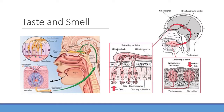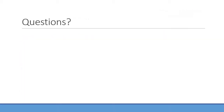Taste and smell are transmitted to similar areas of the thalamus, allowing integration of both senses for a more complete picture of what we're tasting and smelling simultaneously. That completes our coverage of the special senses — equilibrium, hearing, olfaction, and gustation.